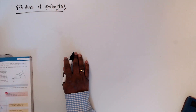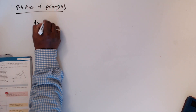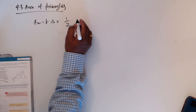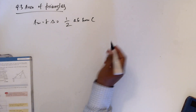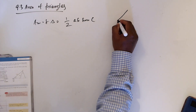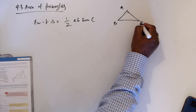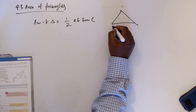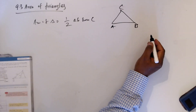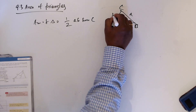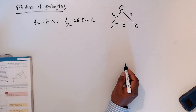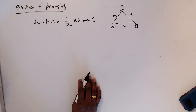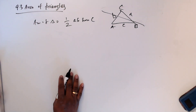Area of triangles, section 9.3. We can usually write the area as half a b sine C. Let's say we have a triangle with vertices A, B, C — so this is an A, B, C triangle where A, C, and B are labeled at their respective corners. The formula is half a b sine C.